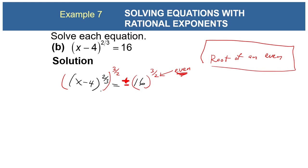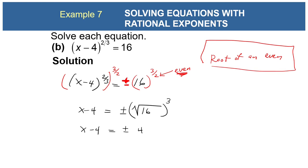The 3/2 cancels out with the 2/3, so I just have x - 4 = ±(something). This is equivalent to the square root of 16, which is 4, and then we cube it. So we have x - 4 = ±64.